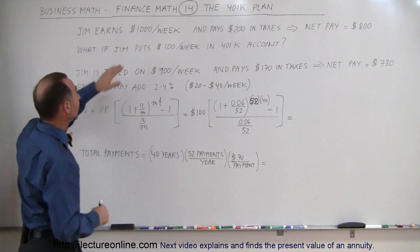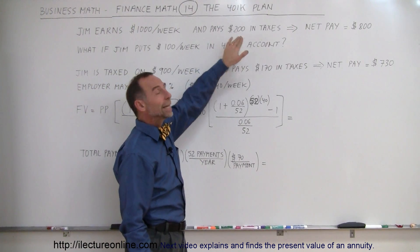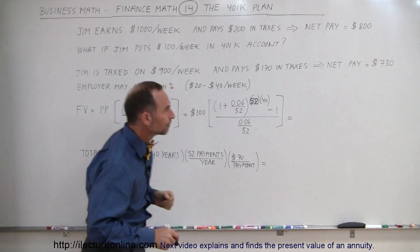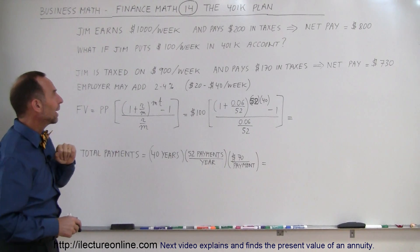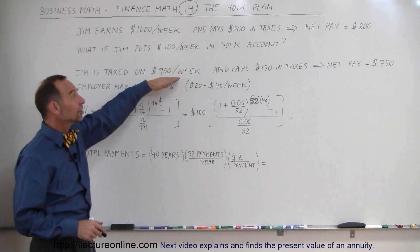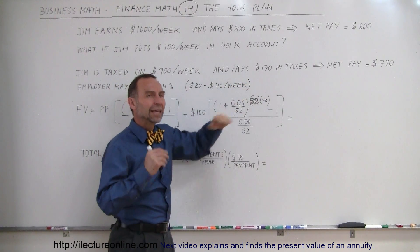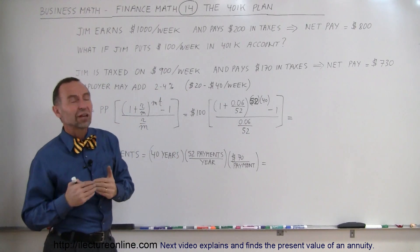So, how does it work? Well, let's say Jim earns $1,000 per week and he pays $200 per week in taxes. So, his net take-home pay would be $800 a week. What if he puts $100 a week into a 401k plan? Well, then he only gets taxed on $900. And let's say that his taxes dropped to $170 because he is now in a lower income bracket. And so, he pays a smaller percentage.